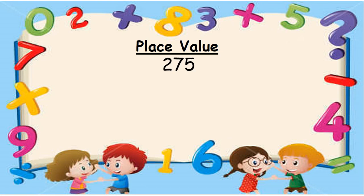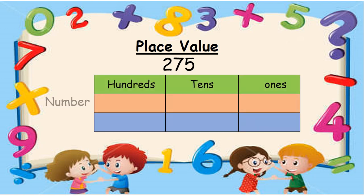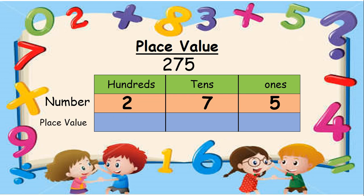Let us take the number 275. We write the number 275 in the place value chart as: number 2 in the 100s column, number 7 in the 10s column, and number 5 in the 1s column. Now let us look at the place value of each digit. As number 2 is in the 100s column, it means that there are 2 hundreds, so its place value is 200.